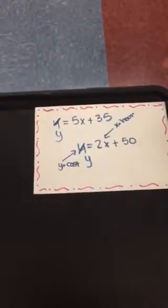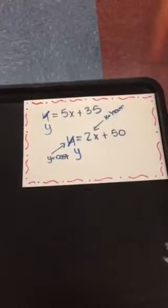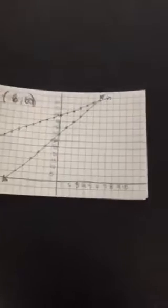We found out that Y was the cost for tables and X was the amount of hours that she was renting for. So then we graphed the two equations we did on the last slide.